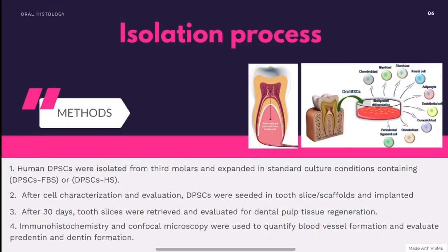Let's get into the details of what scientists have done to experiment with the ability of dental pulp derived stem cells in regenerating dental pulp. Human dental pulp derived stem cells were isolated from third molars and expanded in standard culture conditions containing either human serum or fetal bovine serum. After characterization and evaluation, cells were seeded in tooth slices and implanted subcutaneously into immunodeficient mice. After 30 days, tooth slices were retrieved and evaluated for dental pulp tissue regeneration using immunohistochemistry and confocal microscopy to quantify blood vessel formation and evaluate pre-dentine and dentine formation.